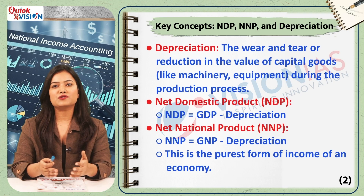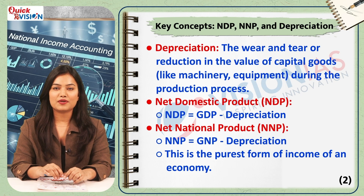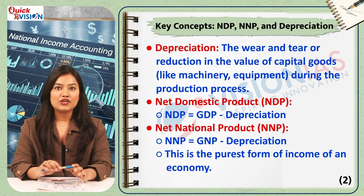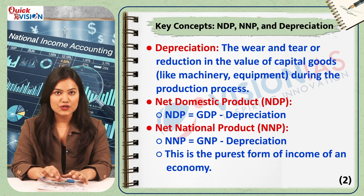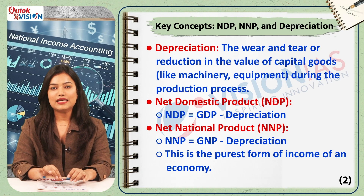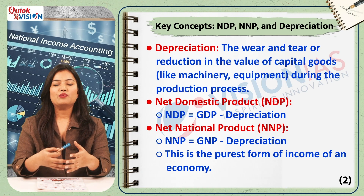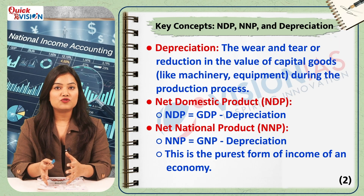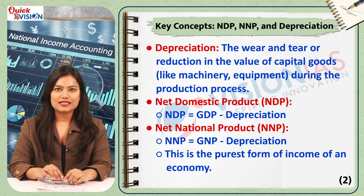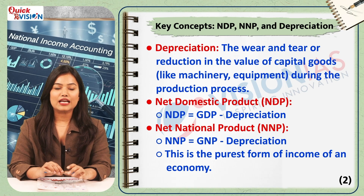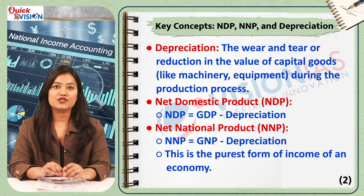When we move from gross to net, we need to understand depreciation. The wear and tear of machinery and equipment during the production process is called depreciation. When we subtract depreciation from GDP, we get the net domestic product or NDP. Similarly, when we subtract depreciation from GNP, we get the net national product or NNP. NNP is considered a better measure of income than GNP because it accounts for the capital loss incurred during production.